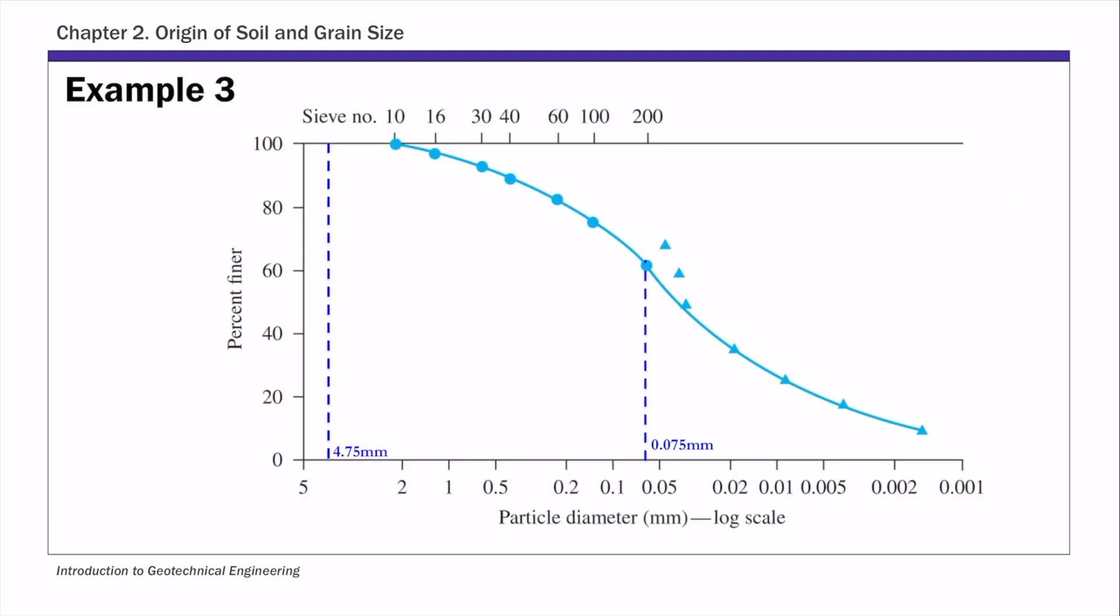Come back to this particle size distribution curve. If you look at the largest particle in this soil sample on the horizontal axis, the largest particle is only 2 millimeters. And remember that gravel is anything larger than 4.75 millimeters, which is right here. So I've marked it on this graph. That means 100% of the soils have particles that are smaller than 4.75 millimeters. So for size of 4.75 millimeters, the percent passing for this soil is 100%.